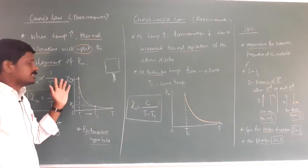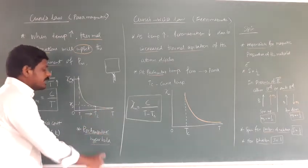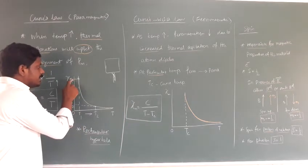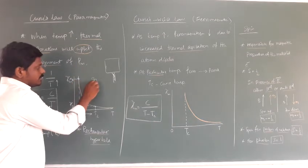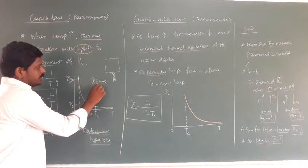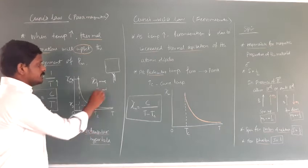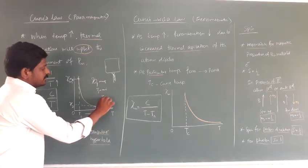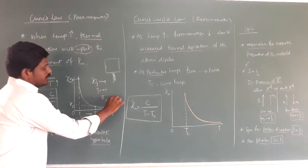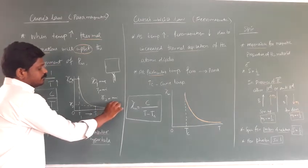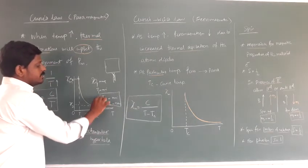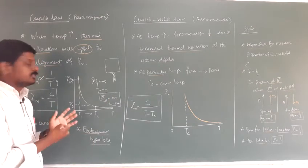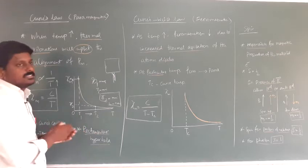If we plot magnetic susceptibility versus temperature, we get a rectangular hyperbola. At the initial point, magnetic susceptibility is maximum (χ₁ is maximum) and temperature is minimum. If we increase the temperature to T₂, magnetic susceptibility becomes minimum — it is reduced. So as temperature increases, magnetic susceptibility decreases, meaning how fast the material is magnetized decreases.